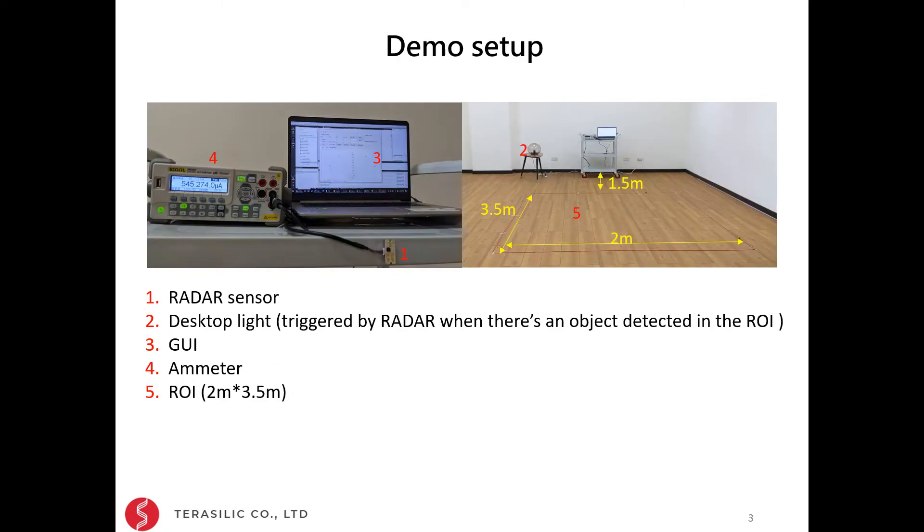This is the demo setup of the ROI trigger. Here we have a Terasilic radar sensor, a desktop light which will be triggered when there is an object detected in the ROI, a graphic user interface to show detected objects, an ammeter to show the average operating current, and a rectangle ROI which is 2 meters long and 3.5 meters wide.